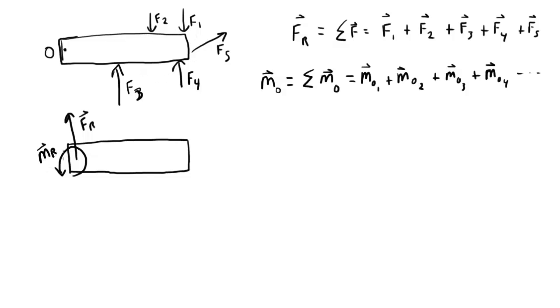Then MR, in this particular case, as I've drawn it, points out of the board. But it is a vector. So all simplification is, is an attempt to replace these, what can be quite complicated, and we'll get to some very complicated ones in a minute, or actually next week, loads that are applied to rigid members with a single load and a resulting moment.